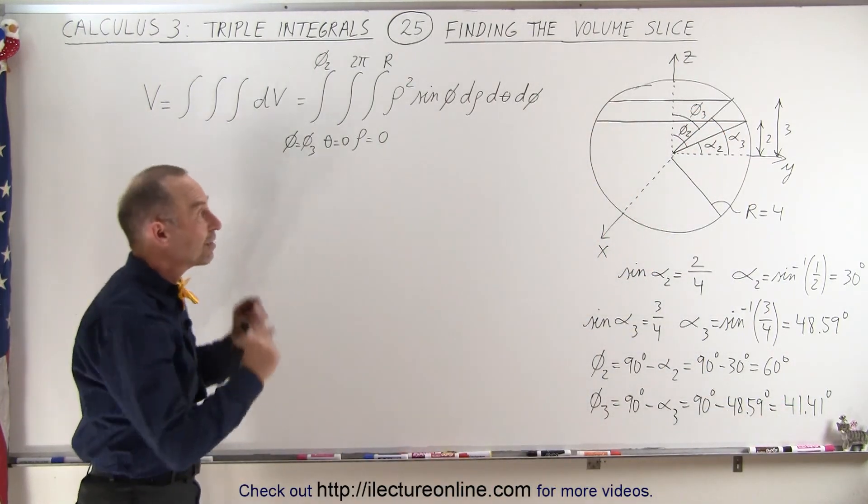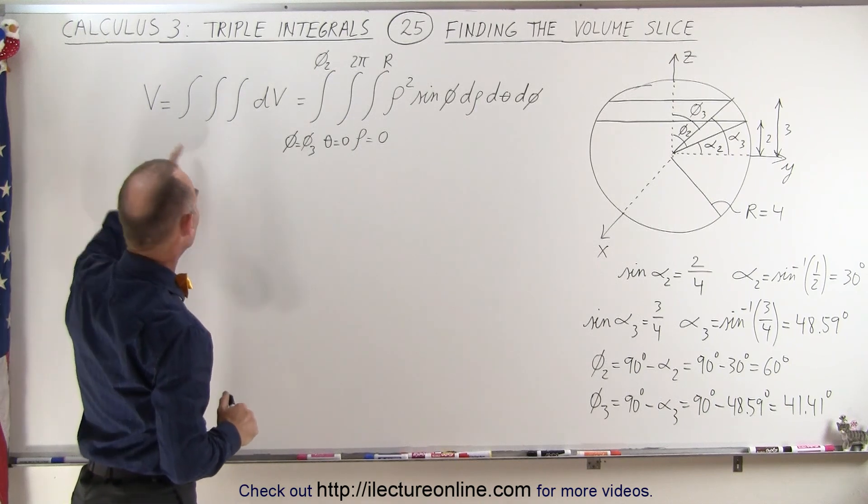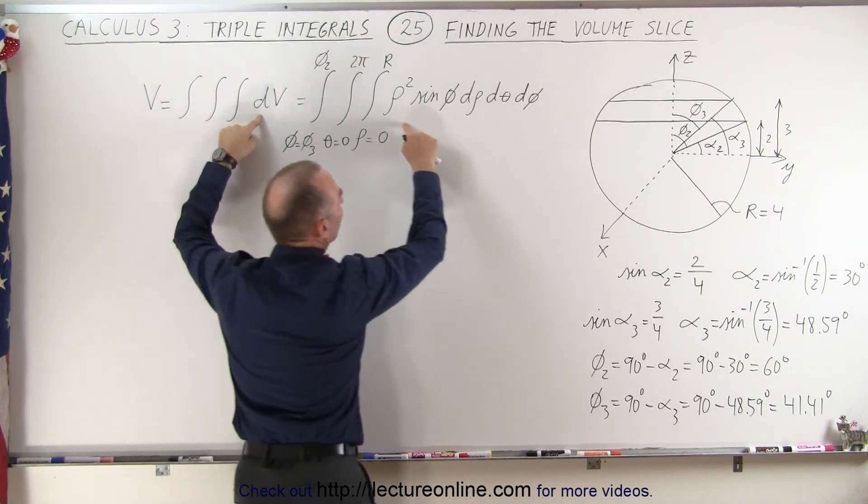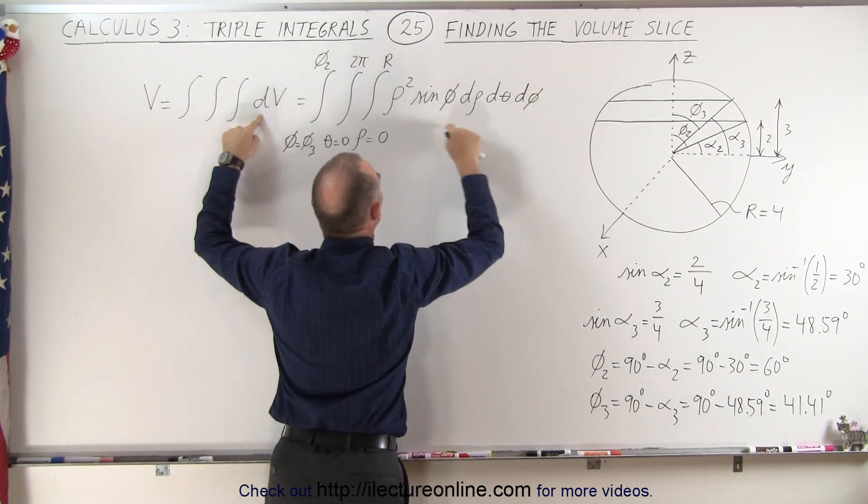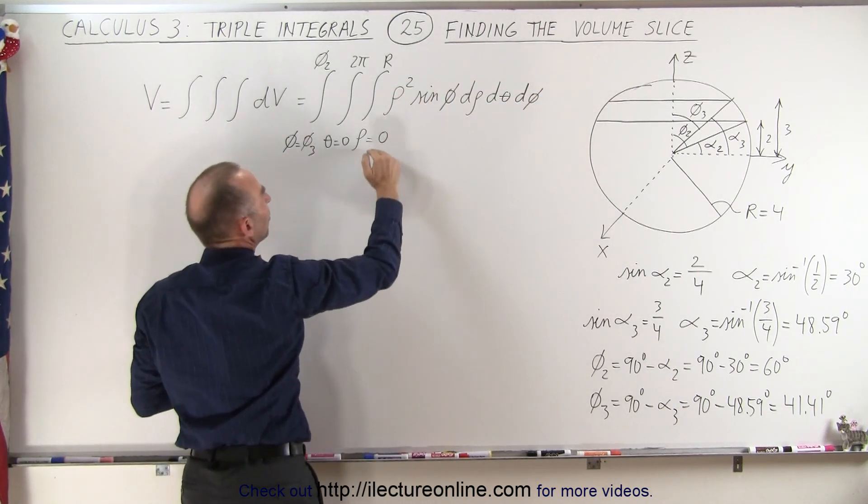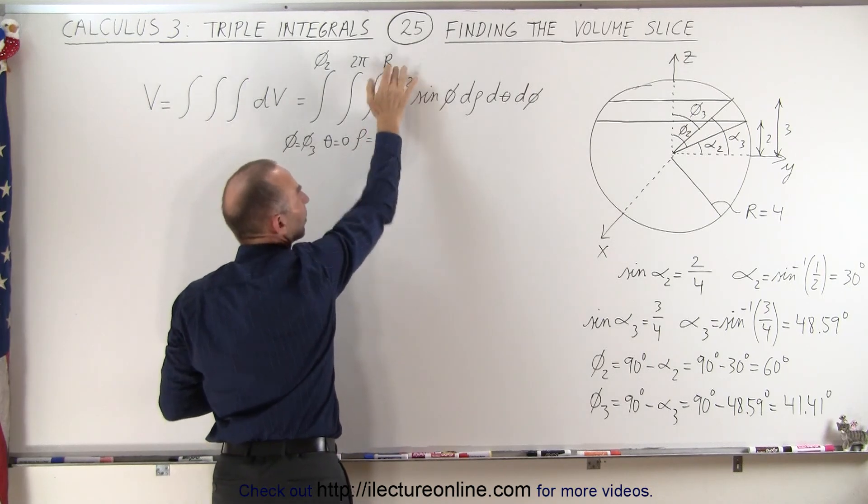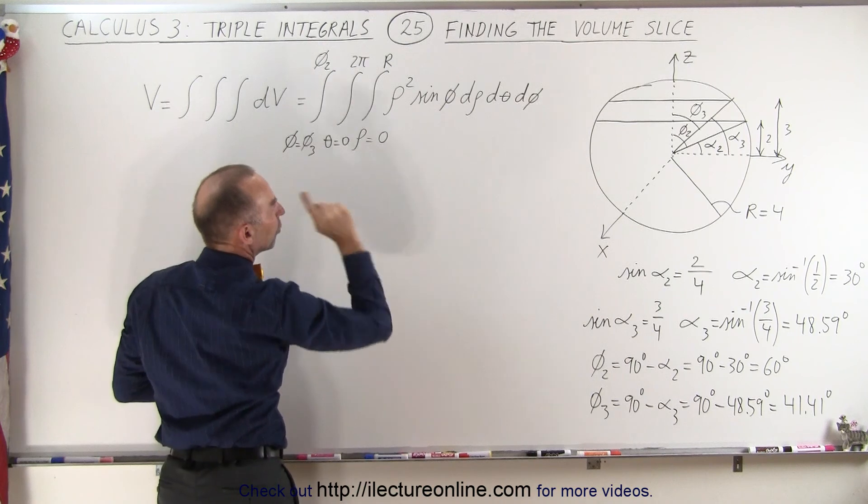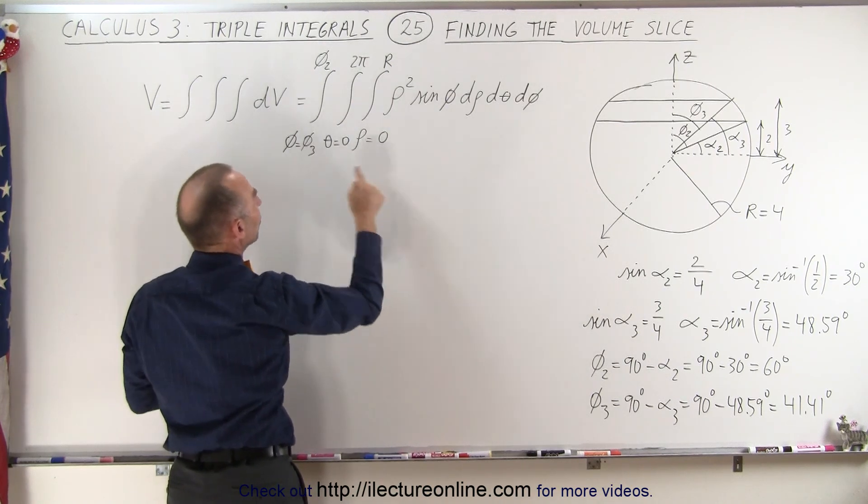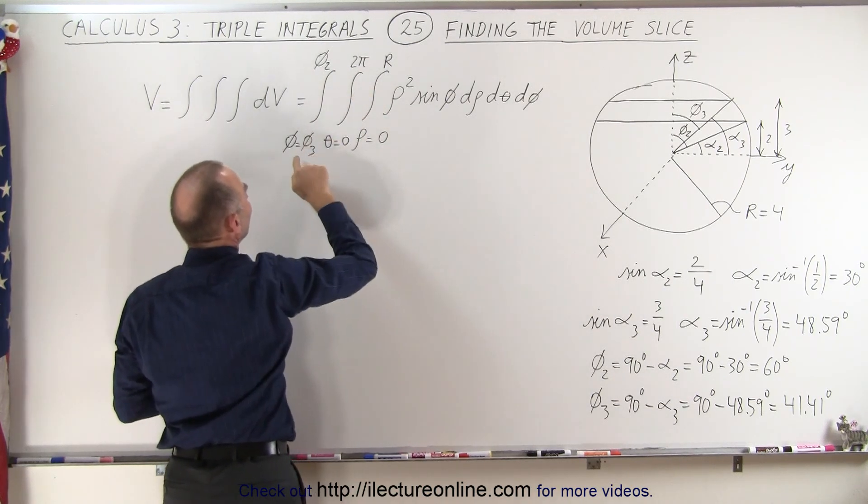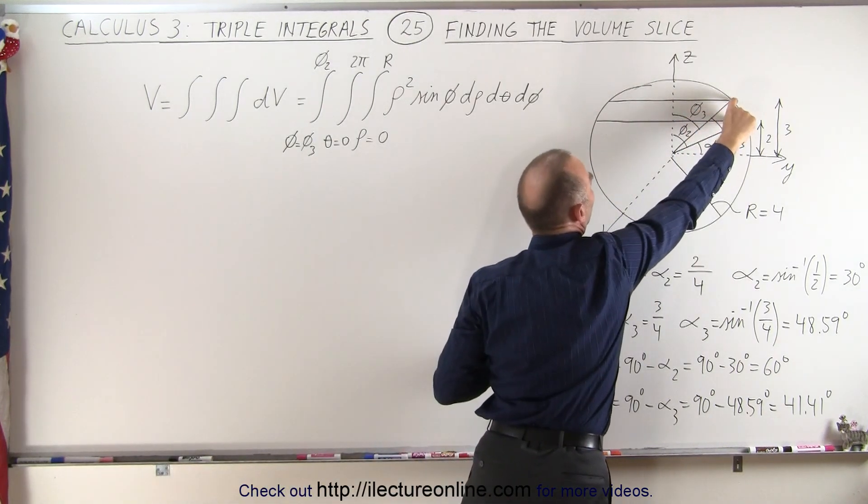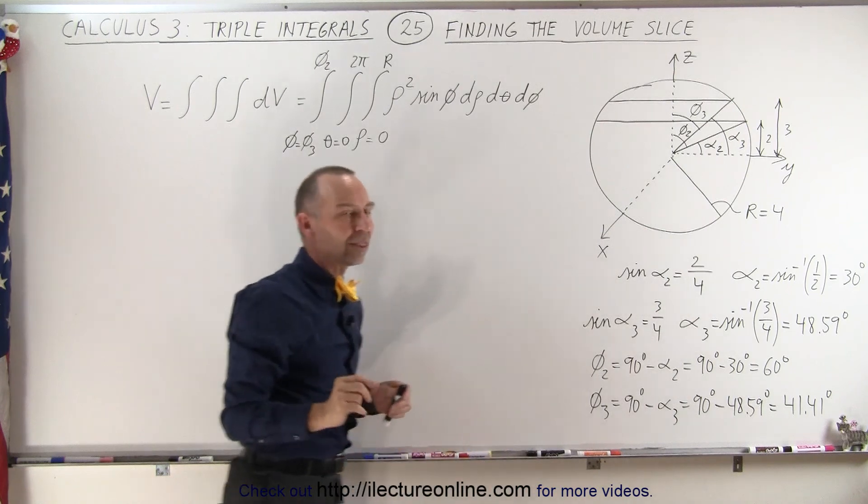So now we're ready to find the volume of that slice because the volume of the slice will be the triple integral over dv, where dv is the volume element in spherical coordinates. The limits are going to be from 0 to r, 0 to the radius of the sphere. For the angle theta it's going to go all the way around 360 degrees from 0 to 2π. And for the angle phi we're going to integrate from phi 3 to phi 2 to account for that slice.